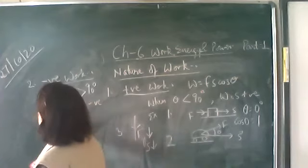Work done by centripetal force is always zero. Centripetal force acts towards the center of a circular path, while displacement at every point is tangential — perpendicular to the centripetal force. So the angle between centripetal force and displacement is always 90 degrees, making work done zero.